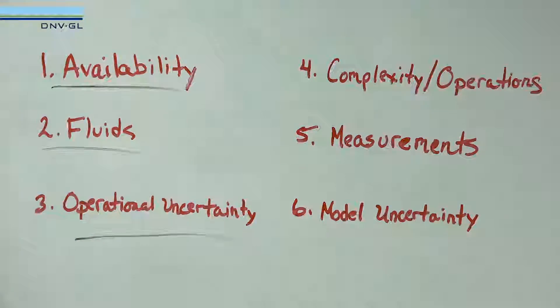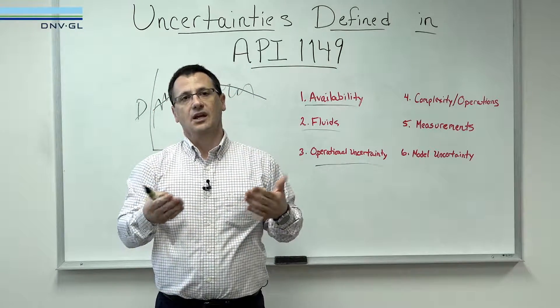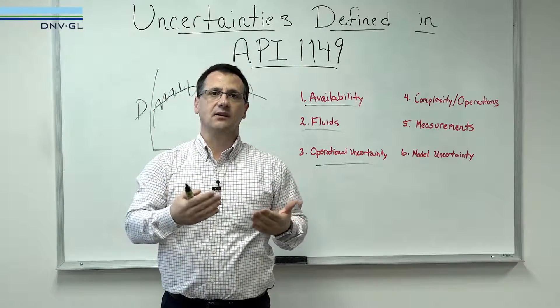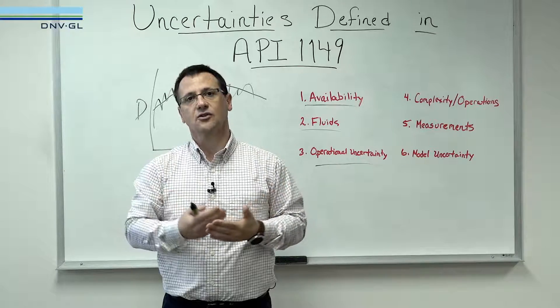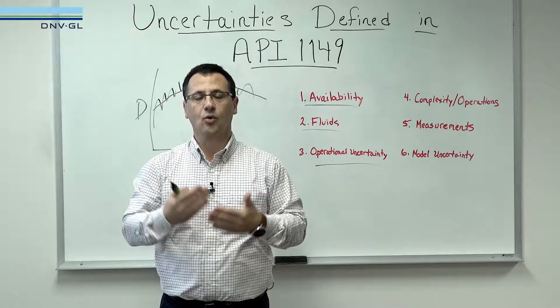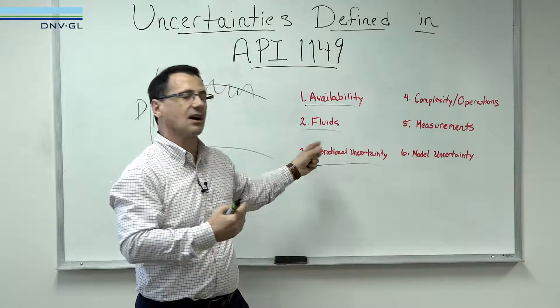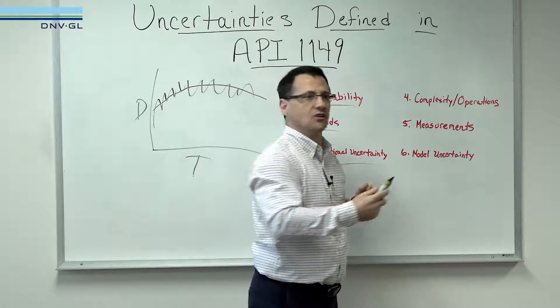Operational uncertainty. Pumps and compressors start up and shut down, and that is similar to a leak event. We need to have quality data in order to recognize that and reduce the alarms caused by these events.